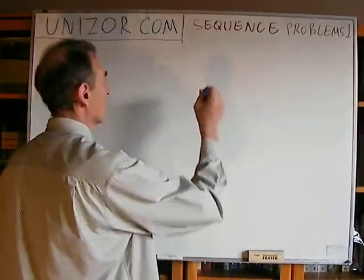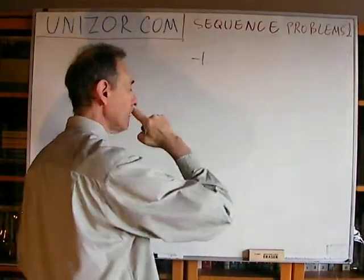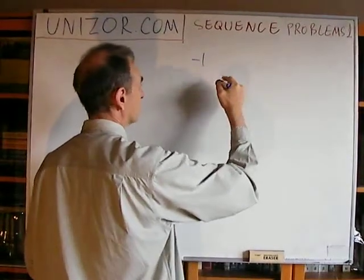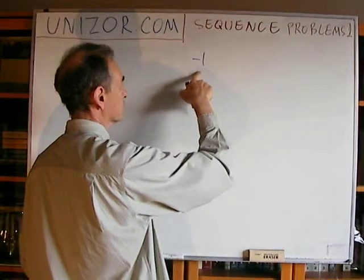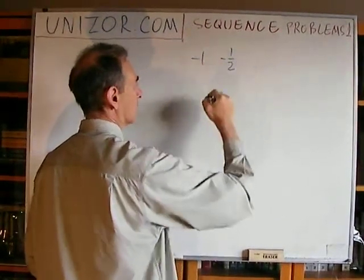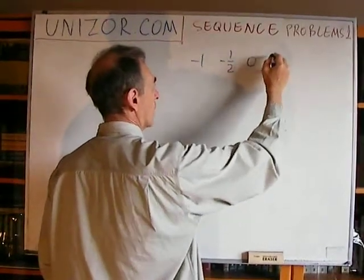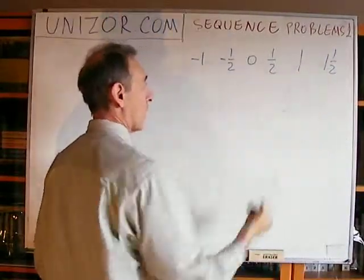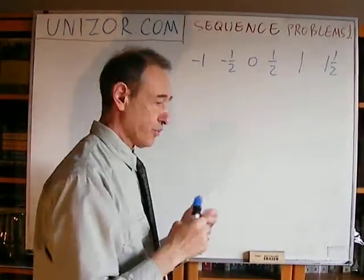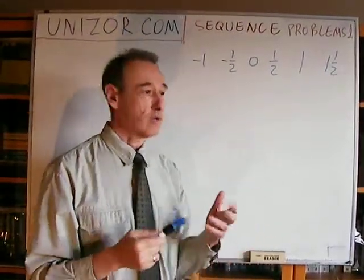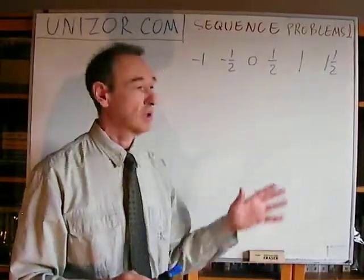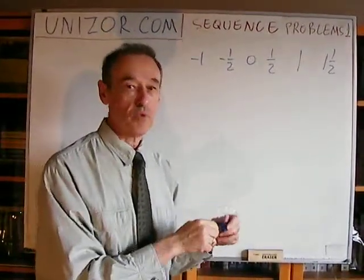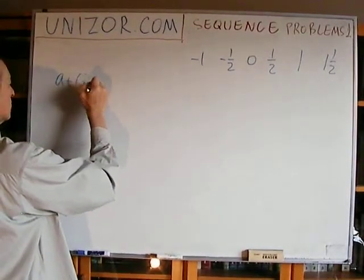Here's an example. You start with minus one, and then you increment on every step your sequence element by one half. So you add one half to minus one, you get minus one half. You add another one half, you get zero. Then you get one half, then one, then one and one half, or three halves, etc. The problem is very simple: try to come up using common logic with a formula which describes this particular sequence. The formula is A plus N minus one times D.